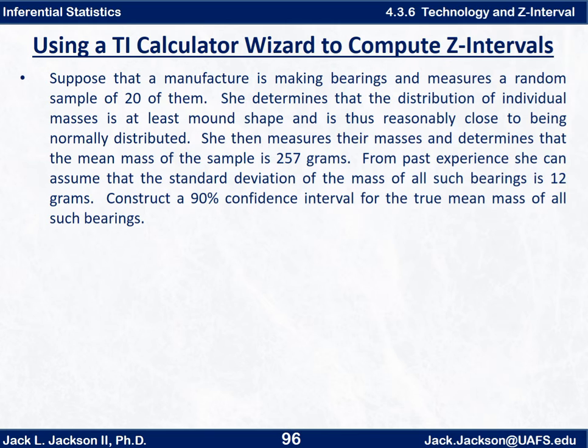Suppose a manufacturer is making bearings and measures a random sample of 20 of them. She determines that the distribution of individual masses is at least mound shaped and is thus reasonably close to being normally distributed. She then measures their masses and determines that the mean mass of the sample is 257 grams. From past experience she can assume that the standard deviation of the mass of all such bearings is 12 grams. Construct a 90% confidence interval for the true mean mass of all such bearings.